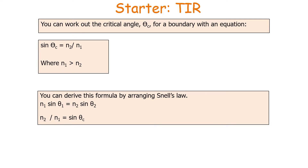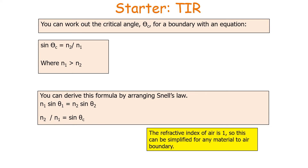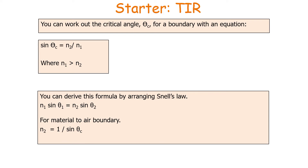You should remember that the refractive index of air is 1, so this equation can be simplified for any material-to-air boundary. For a material-to-air boundary, n2 equals 1 over sine theta c, which simplifies the calculation.